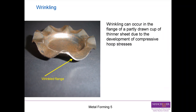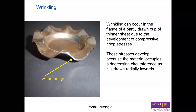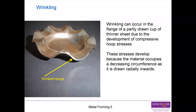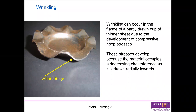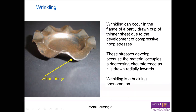Buckling particularly occurs when we have stresses on thin pieces of metal. If we apply tension on a piece of paper, nothing will happen, but if we apply compressive stress, it will buckle. This is exactly what happens here in the metal. This stress is developed because the material occupies a decreasing circumference as it is drawn radially inwards. Wrinkling is a buckling phenomenon.